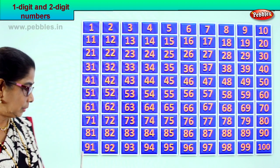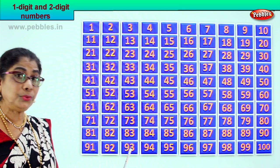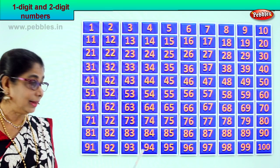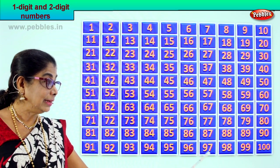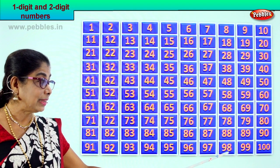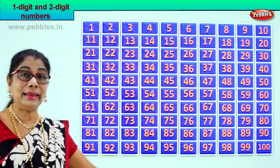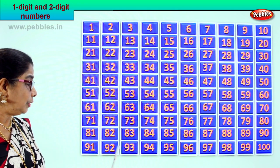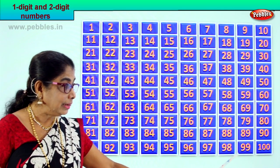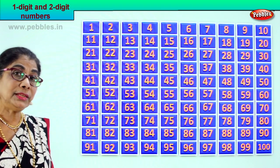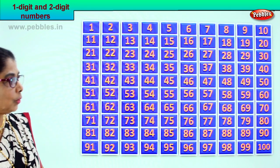Let's take the last set of two-digit numbers. 9 and 1 — 91, 9 and 2 — 92, 9 and 3 — 93, 9 and 4 — 94, 9 and 6 — 96, 9 and 7 — 97, 9 and 8 — 98, 9 and 9 — 99. So 91, 92, 93, 94, 95, 96, 97, 98, 99 — all these are two-digit numbers.